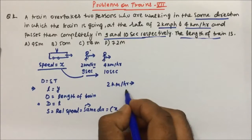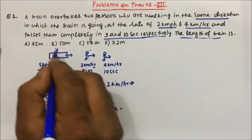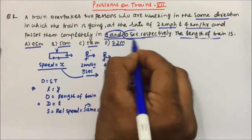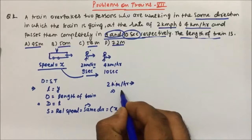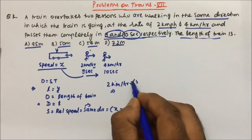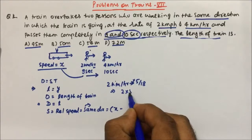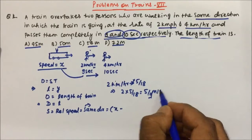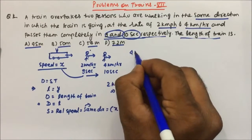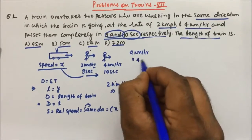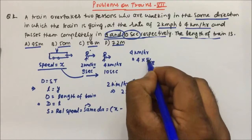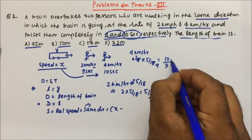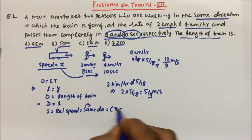We need to convert 2 km/h into m/s because our answer is in meters and time is in seconds. Multiplying by 5/18: 2 × 5/18 = 5/9 m/s. Similarly, 4 km/h converts to 4 × 5/18 = 10/9 m/s.